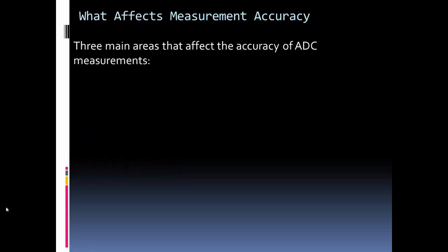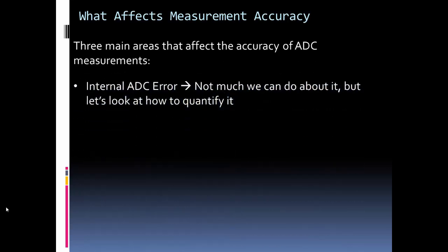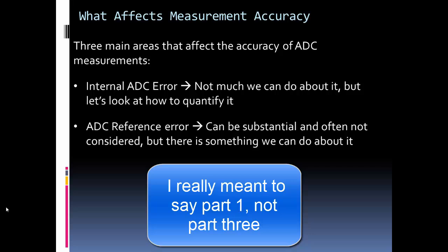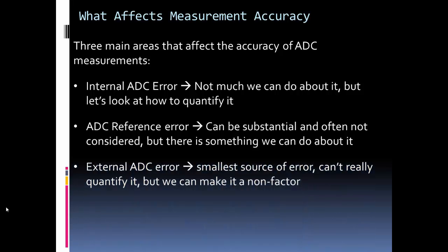So what affects measurement accuracy or ADC measurement accuracy? There's three main areas that affect ADC measurement accuracy. They are the internal ADC error, so this is due to the non-ideal effects inside the chip, and there's not much we can do about these, but we can quantify them. There's the ADC reference error, and we talked a little bit about this in part 3, but this can be substantial. It's sometimes not considered, but there's definitely something we can do to reduce this. And then there's external errors. These are going to be the smallest source of errors. They're very hard to quantify, but we can take steps to make sure they're a non-factor in our measurement.